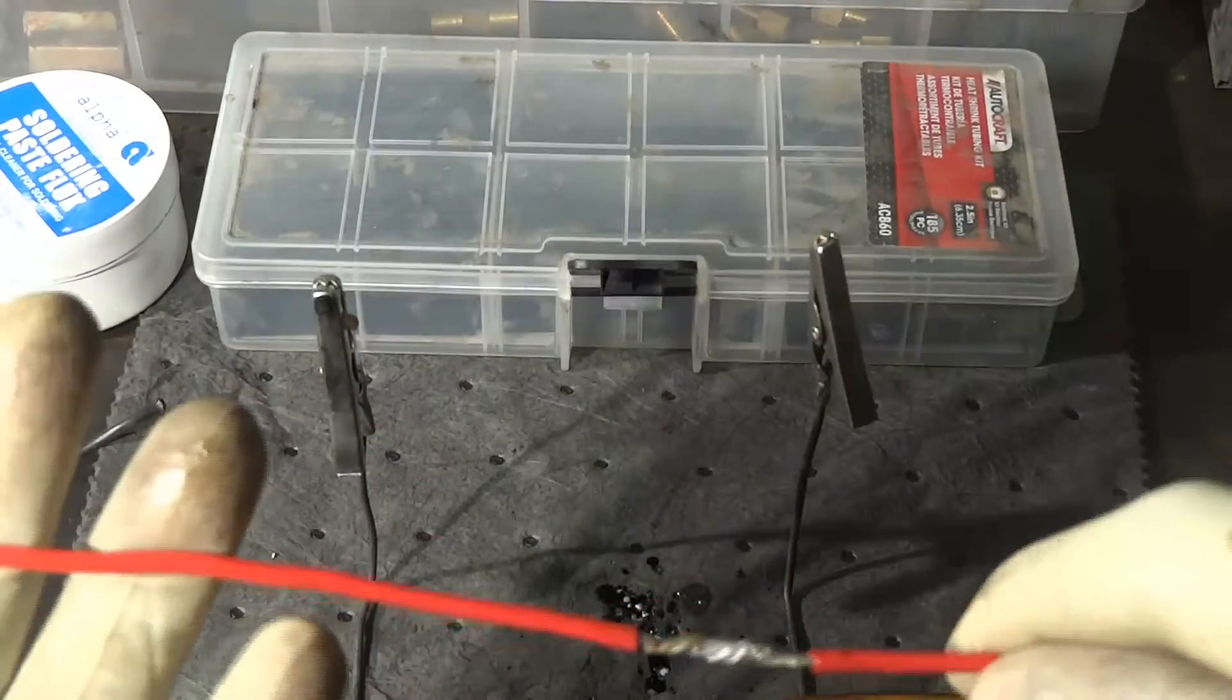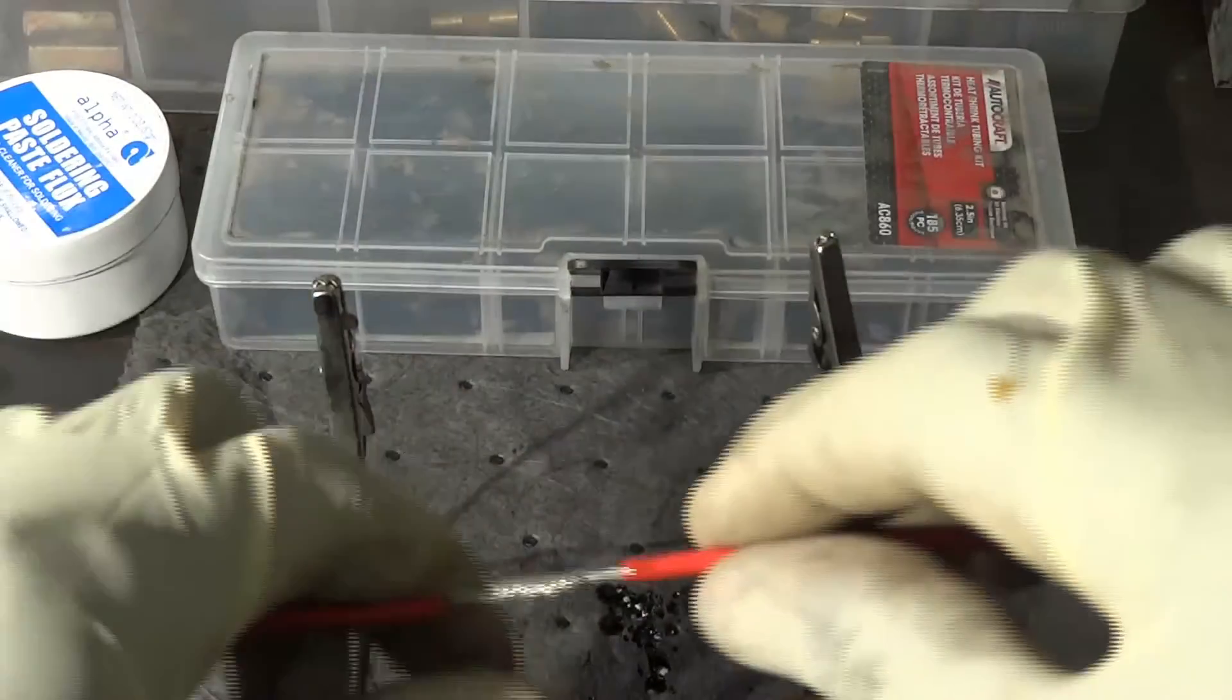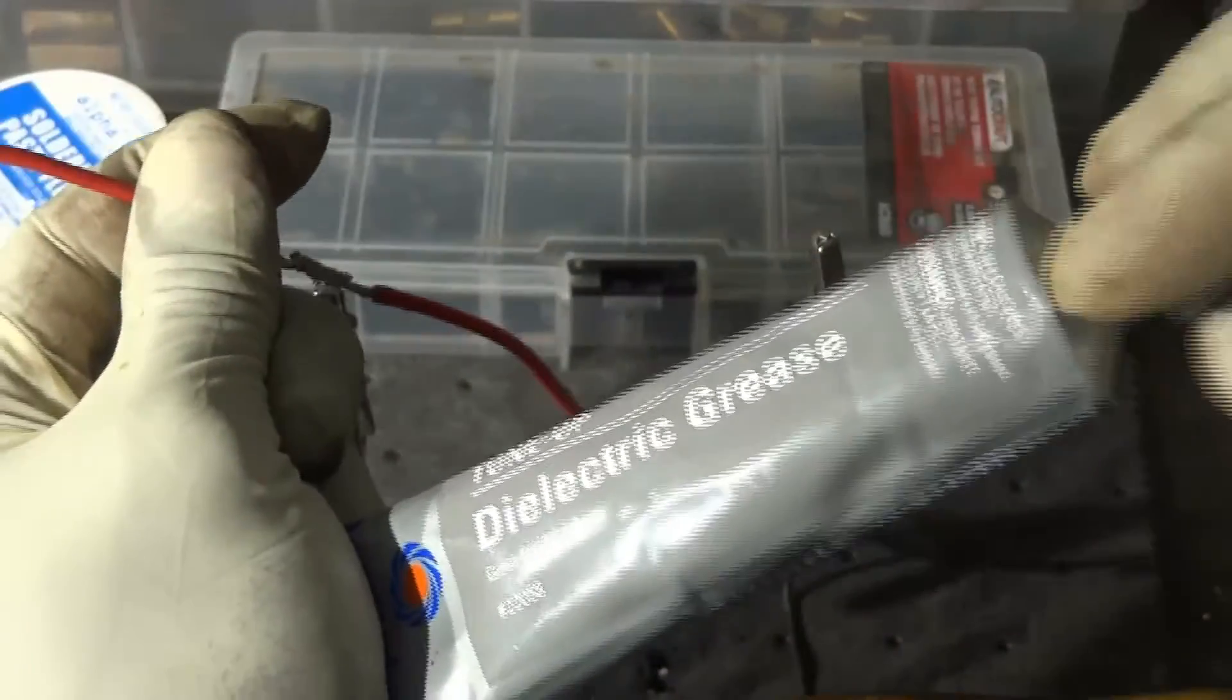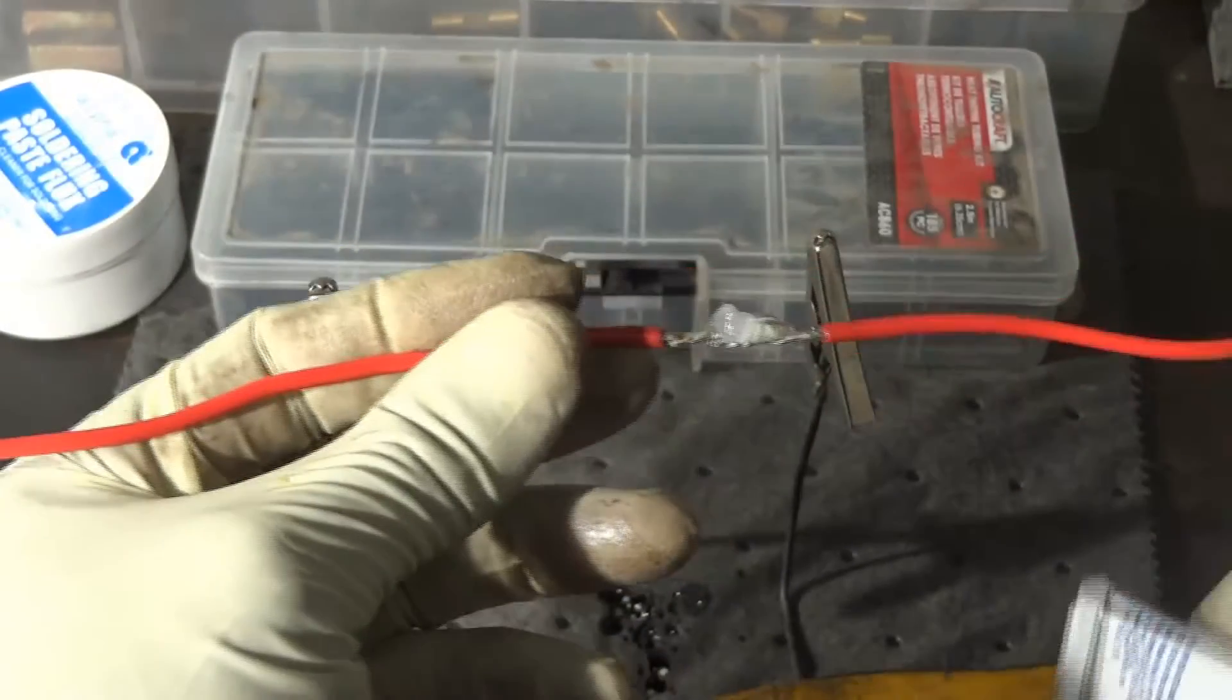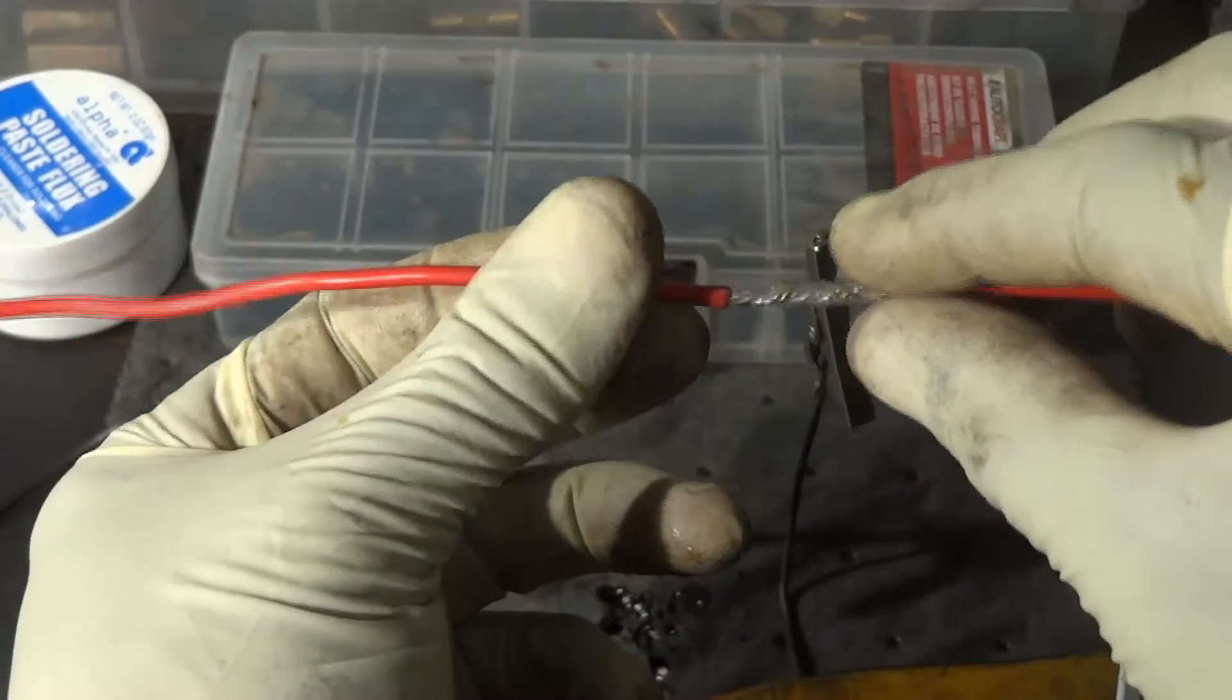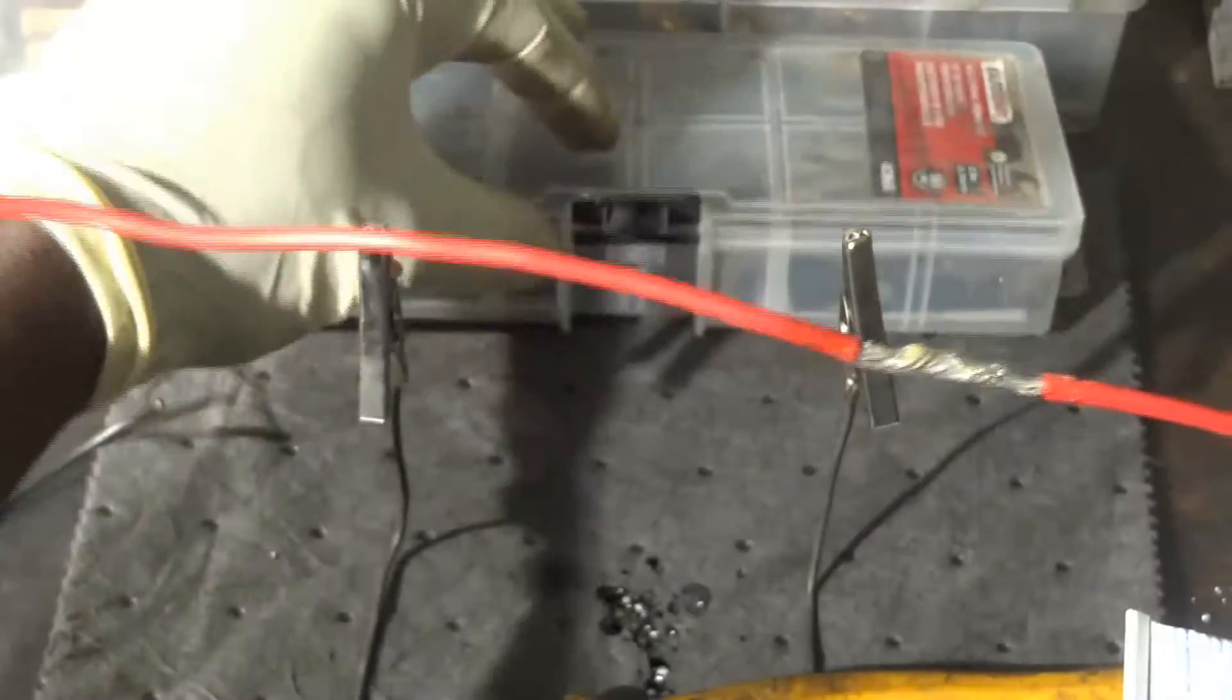So the next step is getting our heat shrink tube. But before I slide a heat shrink tube over this section here, I like applying some dielectric grease on this area. So what this dielectric grease does, it makes this area we just soldered waterproof. So it helps with water intrusion.